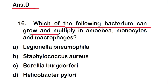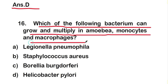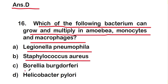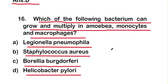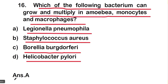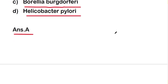Question 16: which of the following bacterium can grow and multiply in amoeba, monocytes, and macrophages? The options are Legionella pneumophila, Staphylococcus aureus, Borrelia burgdorferi, or Helicobacter pylori. The right answer is option A — Legionella pneumophila — which can grow and multiply in amoeba, monocytes, and macrophages.